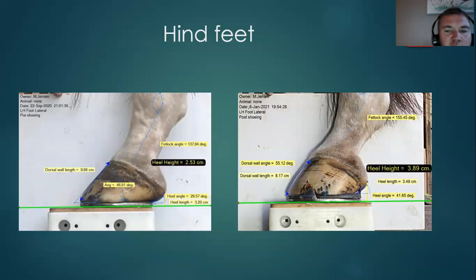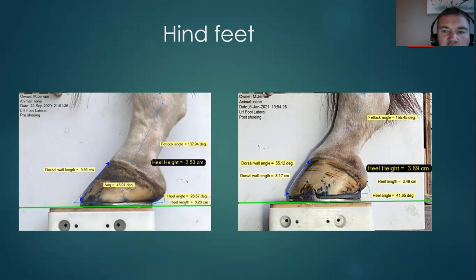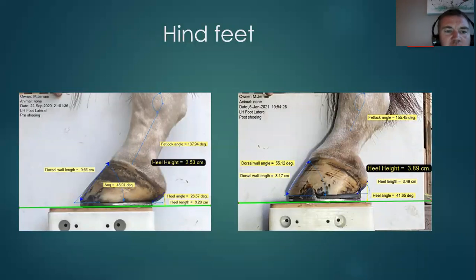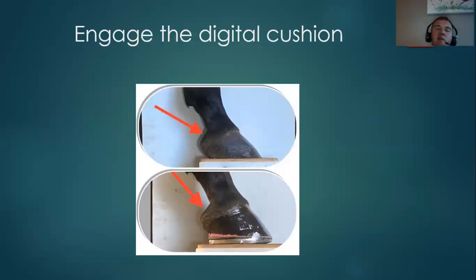Looking from the lateral view of these hind feet, from where we started on the left, we see over time a nine-degree increase in the dorsal wall angle. The heel angle has significantly improved too — still a little bit of progress to make, but a 15-degree increase is good progress. Heel height has increased, fetlock angle has improved with less strain on the suspensory ligament, and the dorsal wall length is reduced. This also helps to engage the digital cushion by applying this type of support.